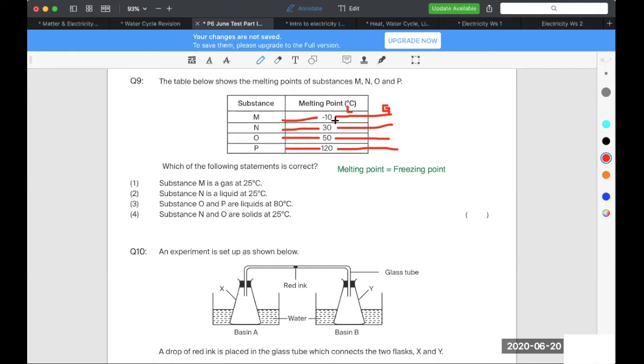After negative 10 is of course either liquid or gas. Do I know for sure whether it will be gas? No, so one is out. Then come to two, N is a liquid at 25 degrees Celsius. Where is 25 degrees Celsius on N? What state would that be? If it's less than 30, solid. Solid. So number two is out.